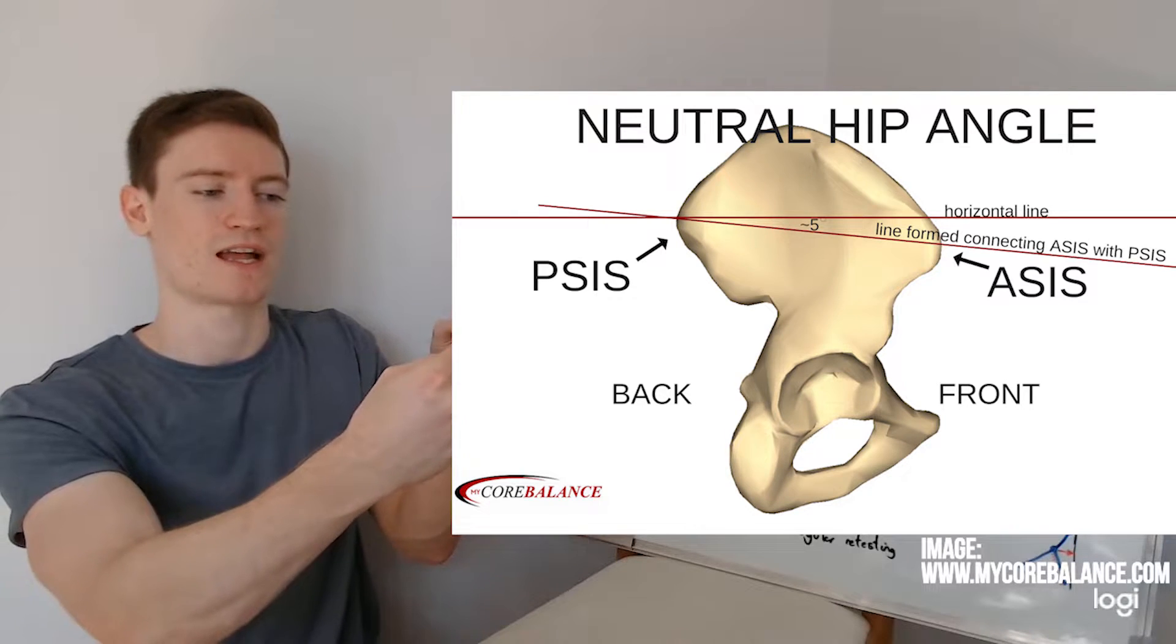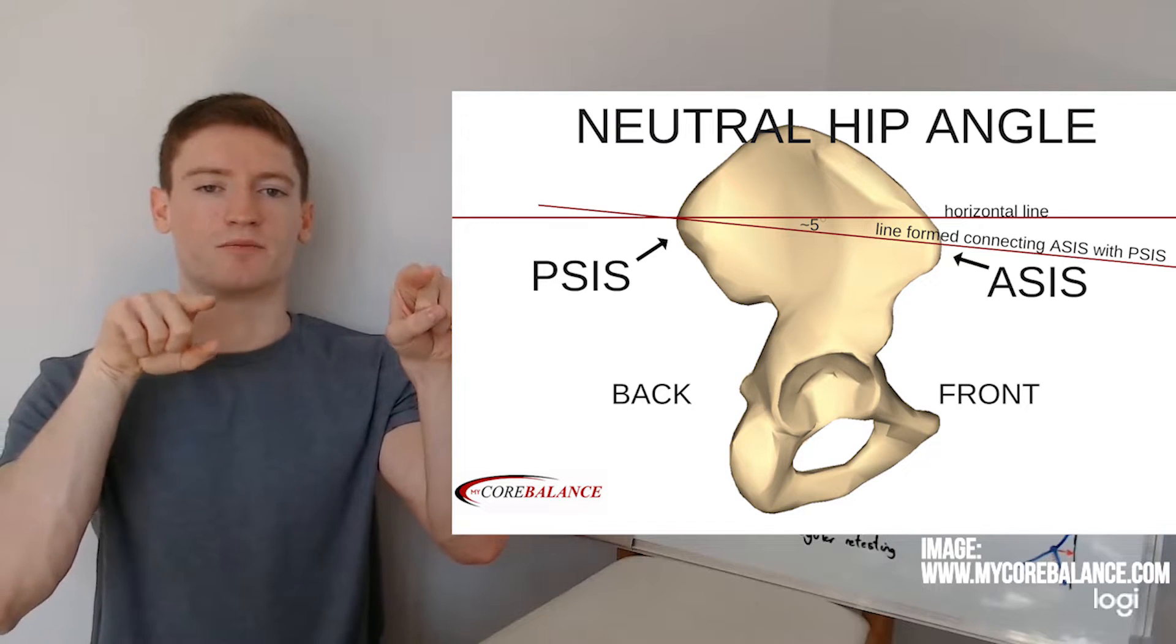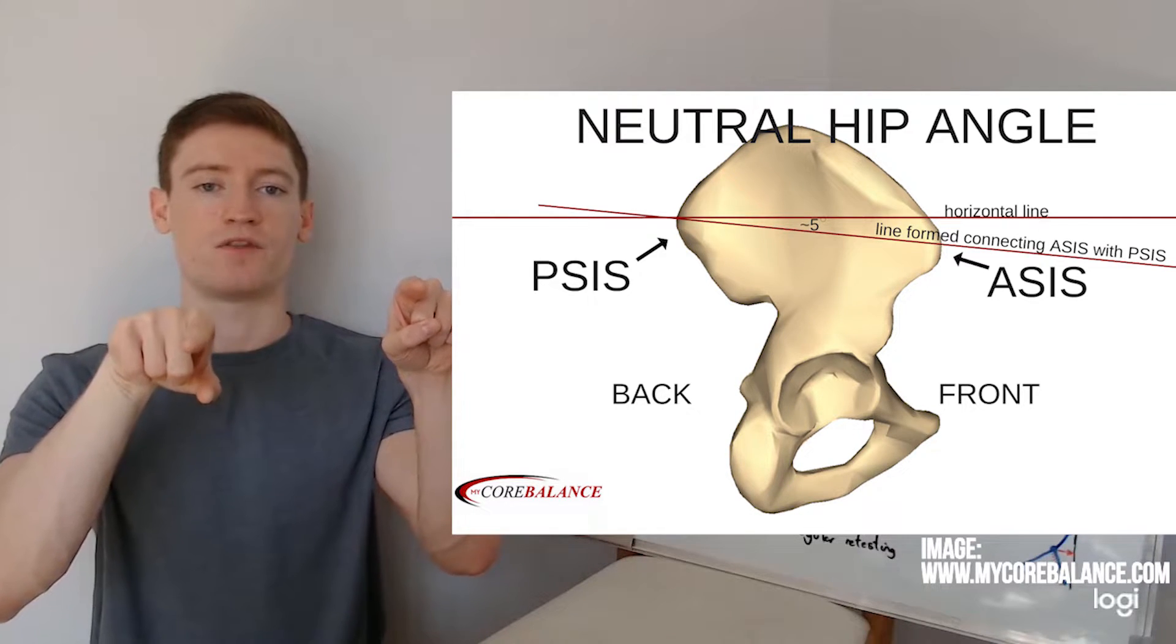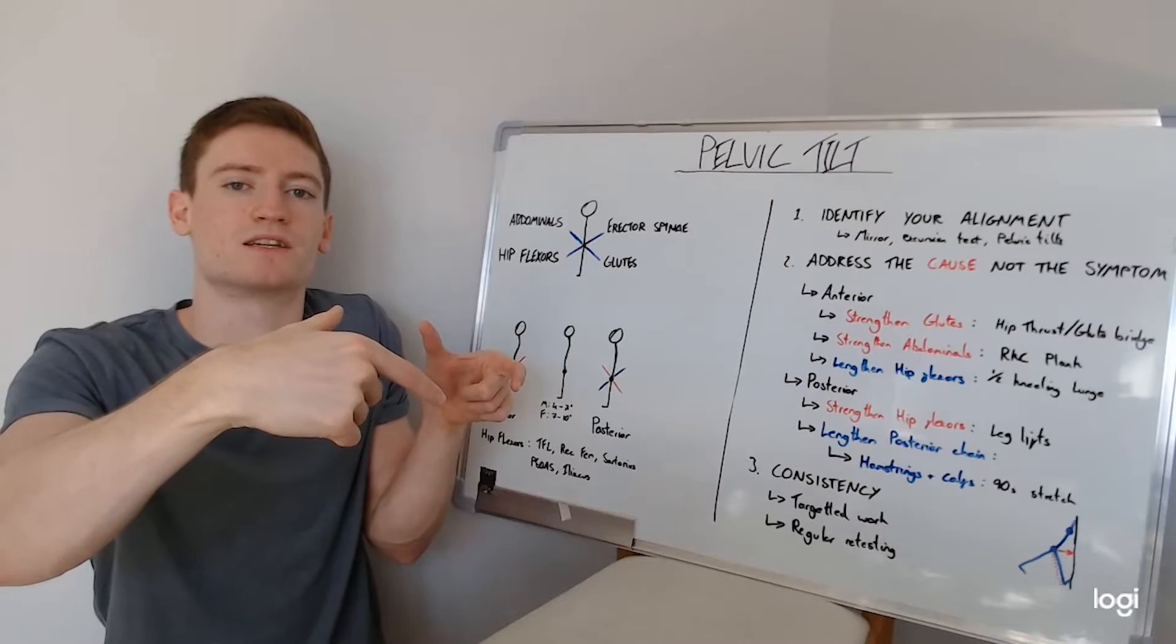What we're looking at is if you've got the ASIS and the PSIS, so on the hip bones themselves, you've got the anterior and posterior side of them, little bony processes. What we're looking for is the correlation between those two. If you've noticeably got a big difference between the two of them, that will illustrate that tilt forwards of the hips.